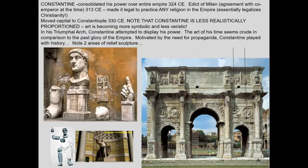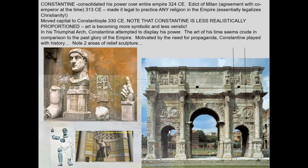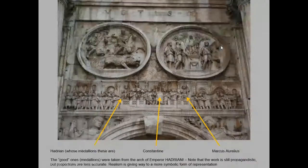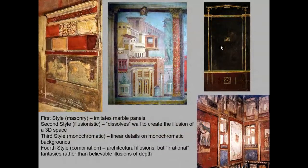When Constantine came along, he reunified things by making monumental sculpture — the proportions may not be perfect, but it's huge. He also took statuary from earlier emperors' monuments and placed it on his own, using art as a propagandistic tool to show his power. The sculpture from his own time period looks more like what we'd see in the Middle Ages — a little less believable, proportions off, heads too big, bodies too small.